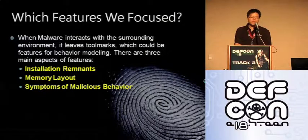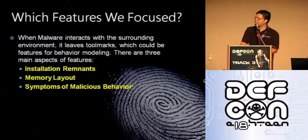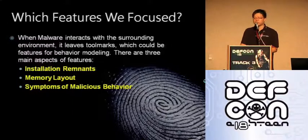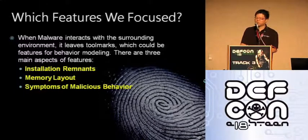When we study the snapshot of the environment, there are three aspects of features we try to collect and analyze. The first is installation remnants — the installation files left after the malware executes, such as startup files or additional registry keys. The second is memory layout — we try to find suspicious memory blocks or suspicious DLLs. The third is suspicious malicious behavior inside the system, such as hidden processes or hidden files. These are all symptoms of malicious behavior that legitimate software would not normally exhibit.